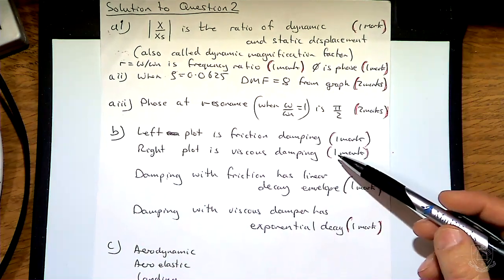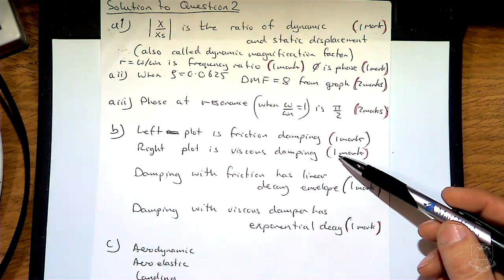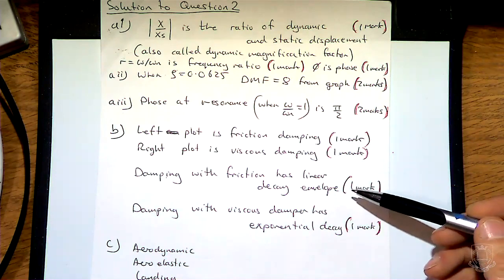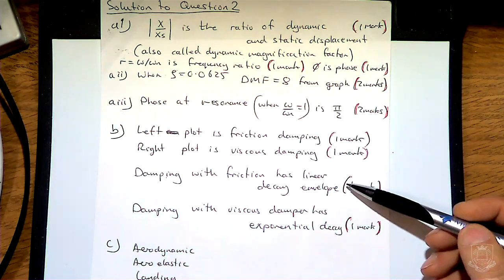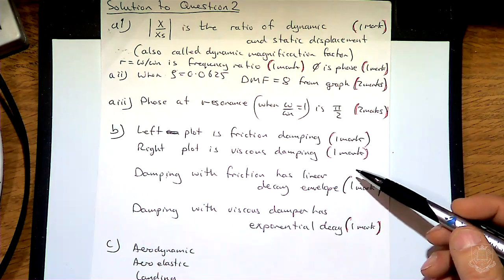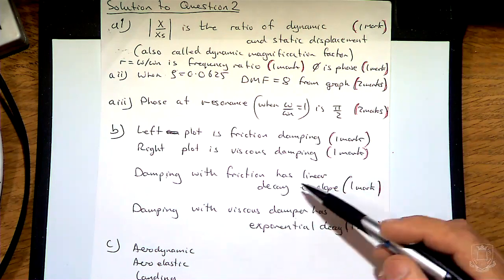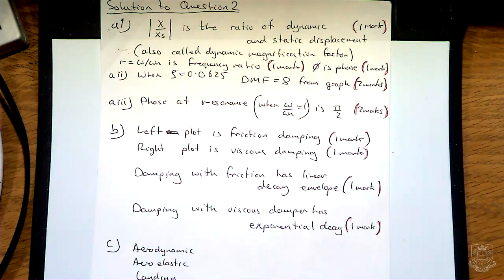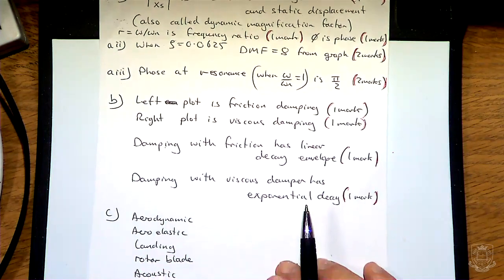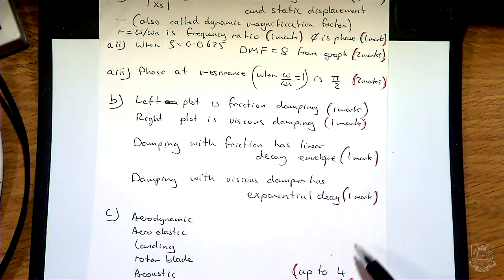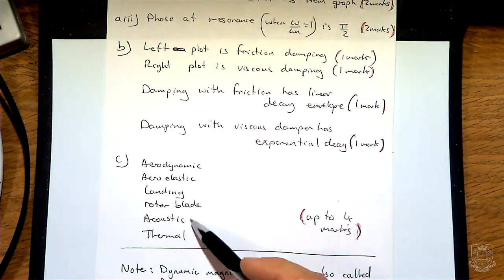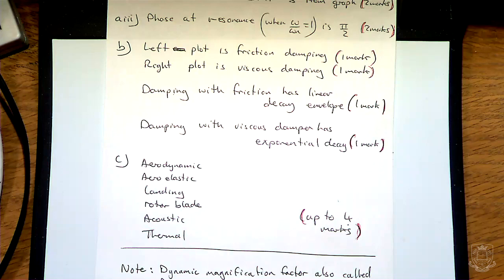Looking at the decay plots: a decay that is almost like straight lines is friction damping, while an exponential decaying envelope is viscous damping. You get two marks for each — one mark for writing it down and an extra mark for explaining why from the shape of the decay curve. Typical answers to Part C include various sources of vibration in aerospace, all acceptable, and there are other things you can come up with.